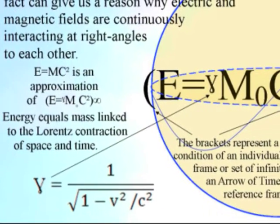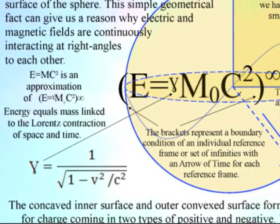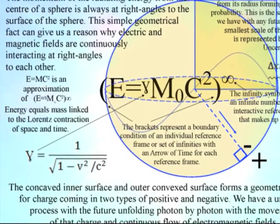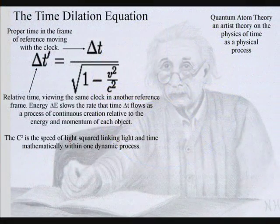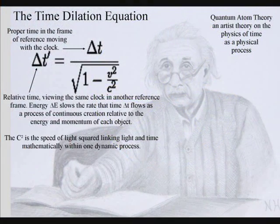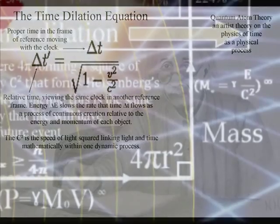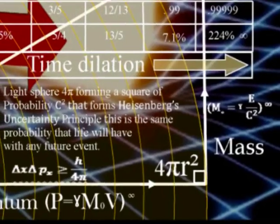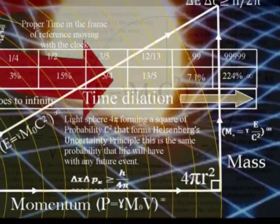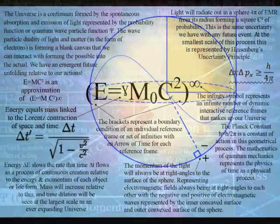All we have to do is place the Lorentz contraction of space and time between the energy and mass. Therefore, the greater the energy, the greater the contraction of space and the slower time will run. Mass will increase relative to this, and each reference frame can be seen as a vortex in space and time.